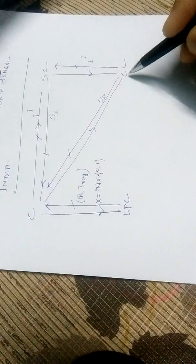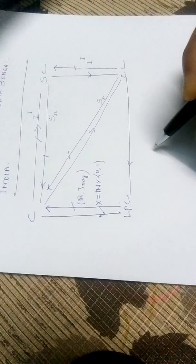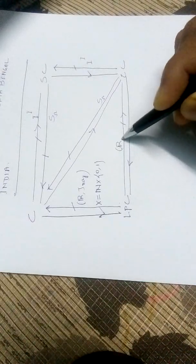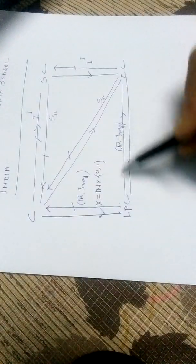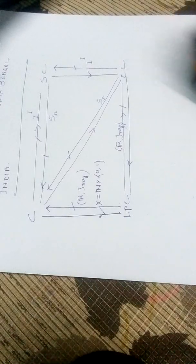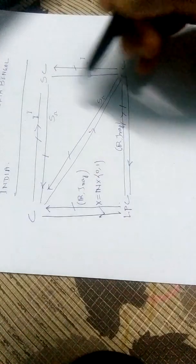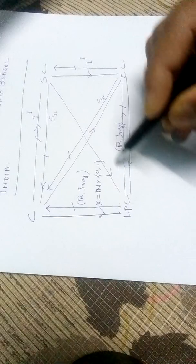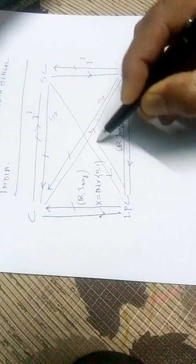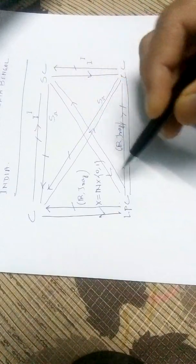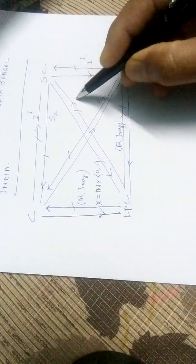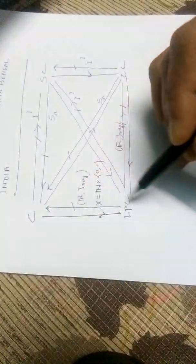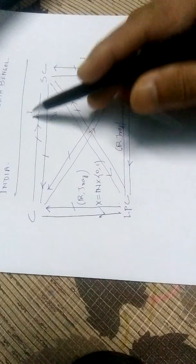A countably compact space may not imply compactness, and S_omega is an example for this: it is countably compact because it is sequentially compact and every sequentially compact space is countably compact, but S_omega is not compact. We also proved that every countably compact space is limit point compact. But a limit point compact space may not be countably compact — for example, R with tau_ray is limit point compact but not countably compact. We also showed that every sequentially compact space is limit point compact, but I^I is limit point compact and not sequentially compact.